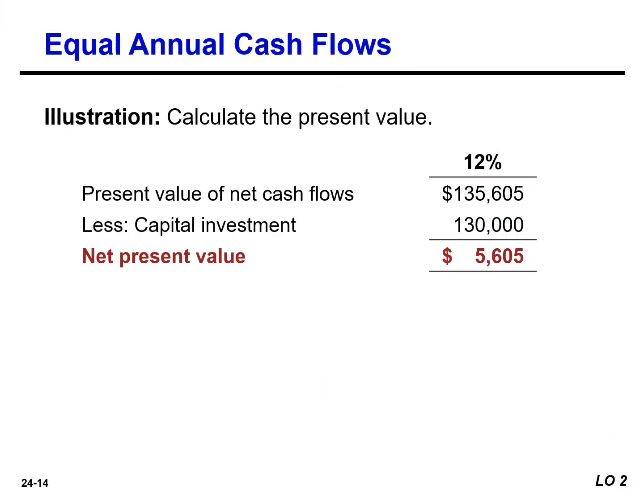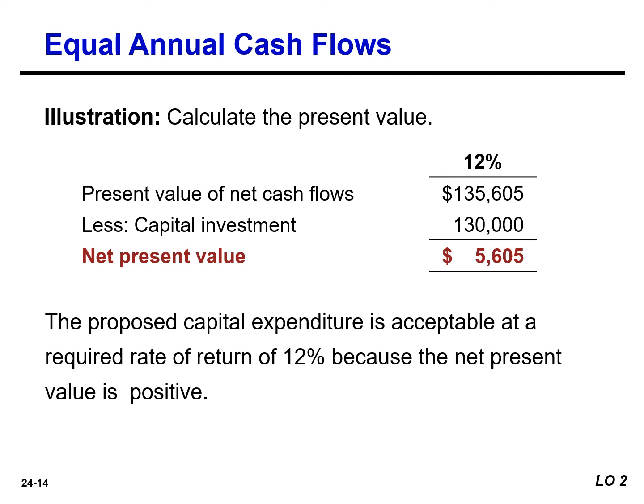The net present value method compares the present value of net cash flows with the capital outlay required by the investment. The difference between these two amounts is the net present value, or $5,605. The proposed capital expenditure is acceptable at a required rate of return of 12% because the net present value is positive.